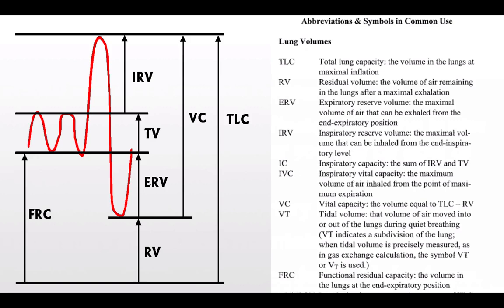Above RV is ERV — expiratory reserve volume — which you can eliminate by maximum exhalation effort. Combining RV and ERV gives you functional residual capacity, or FRC. Capacities indicate a summation of lung volumes. FRC is critical when applying CPAP and PEEP: the larger your FRC, the greater the lung surface area available, allowing more oxygen to diffuse through. More FRC equals a larger surface area more conducive to oxygen diffusion.